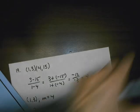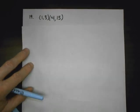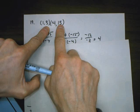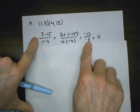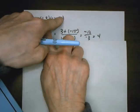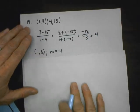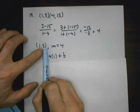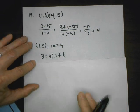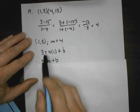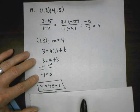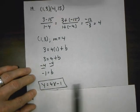Problem 19: given two points, write the equation of the line. Find the slope first: y minus y over x minus x. Using rule for subtraction and teams, negative 12 over negative 3 is 4. Slope is 4. Then take one point and plug into y equals mx plus b to find b. 4 times 1 is 4, subtract 4 from both sides: b equals negative 1. Equation: y equals 4x minus 1.